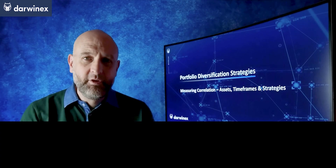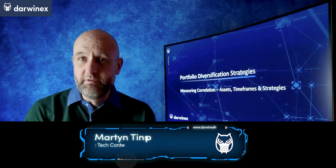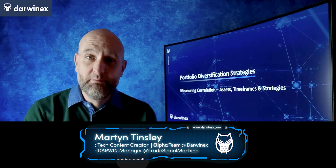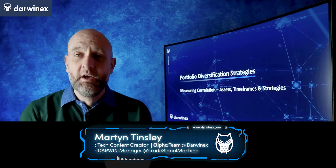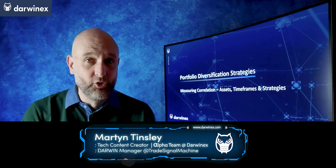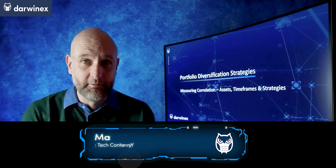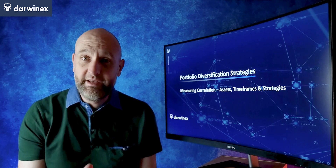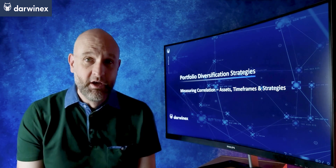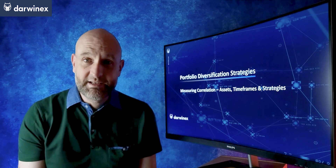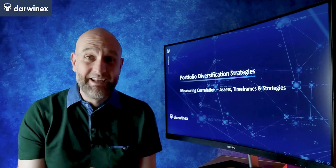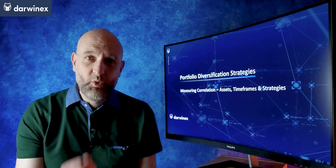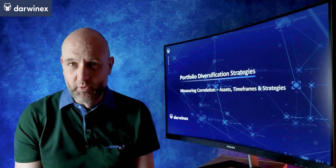Following on from the introduction, hopefully you now understand why it's so important to be able to measure the correlation between the components in your portfolio. If you don't, and you include overly correlated components, this could increase risk and drawdowns instead of reducing them. But what do I mean by components of the portfolio?